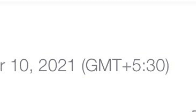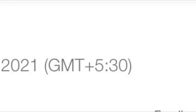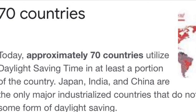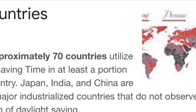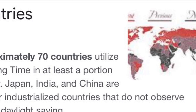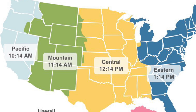We will check the time — it's 2:59 AM, November 10. We will check GMT plus 5:30. Japan, India, and China do not observe daylight saving time. In America, we have Pacific at 10:14 AM, Mountain at 11:14 AM, Central at 12:14 PM, Eastern at 1:14 PM. There is a gap of 1 hour between each zone.